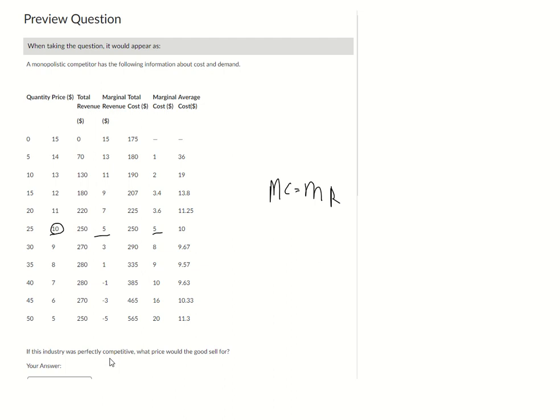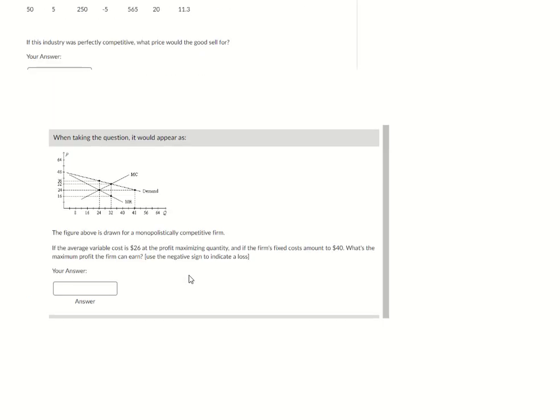Now it might also ask you what is the short-term profit. For short-term profit, take your total revenue minus your total cost. So short-term profit for this company will be zero. And if asked for long-term profit, again, for companies in monopolistic competition and perfect competition, the long-term profit is always zero. Let's look at this question here.